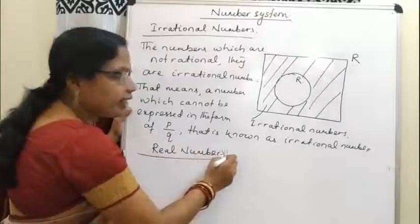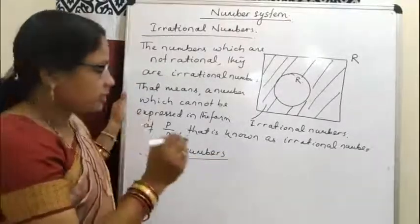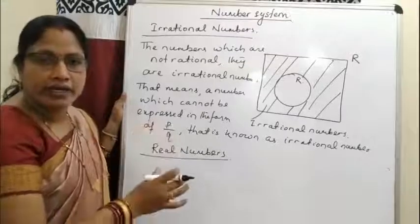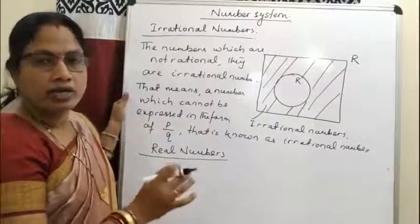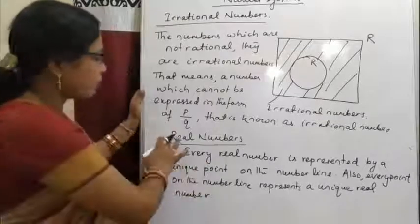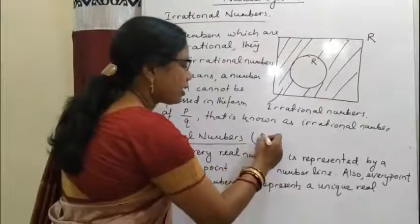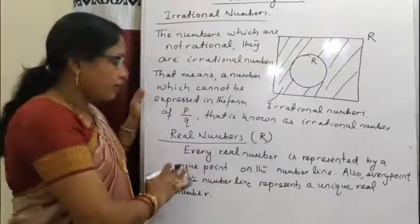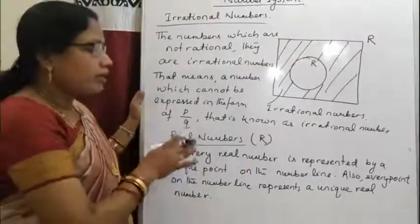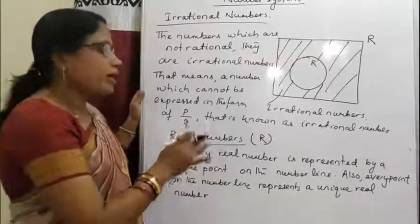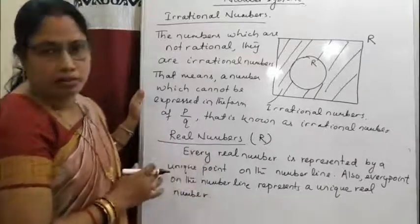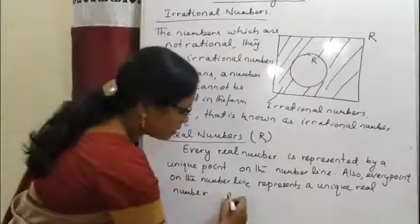On a number line, each point represents a real number, and all real numbers can be represented on a number line — that number line is known as the real number line. The real number is denoted by R. Every real number is represented by a unique point on the number line, just like natural numbers, integers and rational numbers.